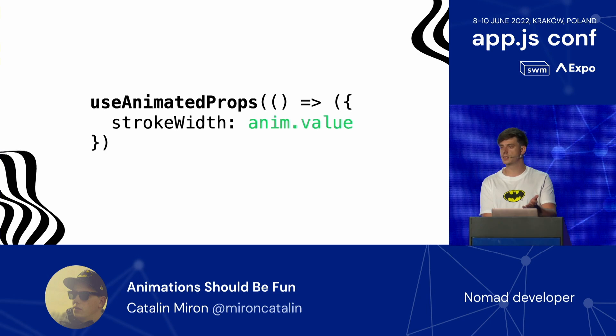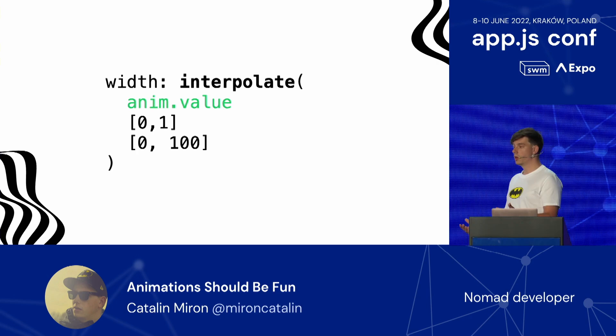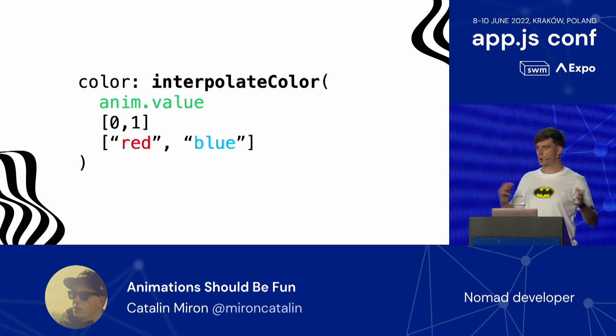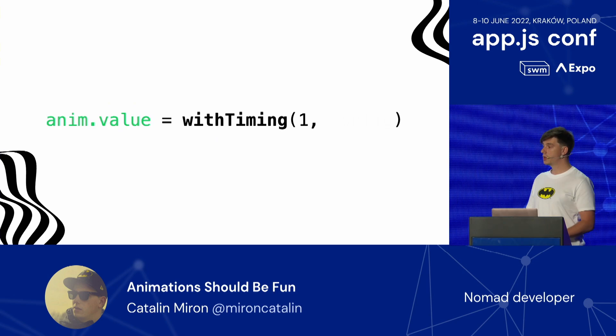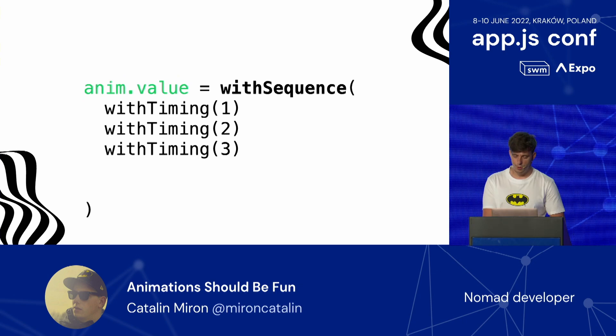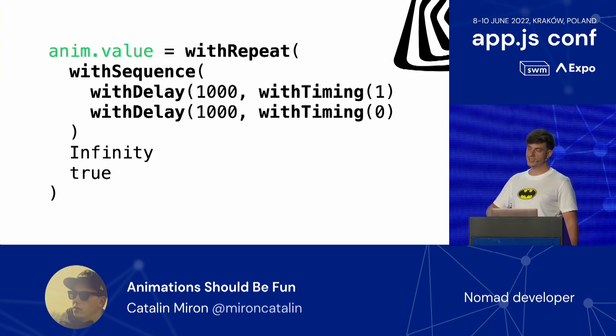useAnimatedProps is the counterpart of useAnimatedStyle but for non-style attributes, like a stroke width or a path. Interpolate lets you remap different values based on an input range and output range. You can also interpolate colors — instead of passing numbers as output, you pass colors, and interpolateColor is smart enough to morph between them, like red and blue in our example. Of course, you can animate shared values using timing, spring, or decay. You can delay animations, repeat them, sequence them, or go crazy and repeat/reverse a sequence of animations that have an initial delay.